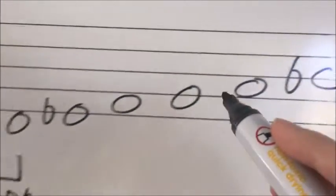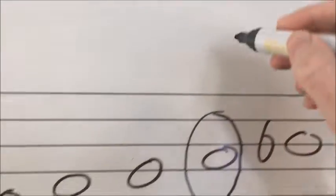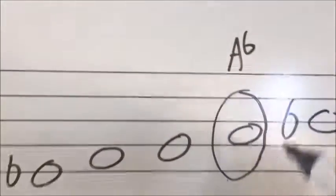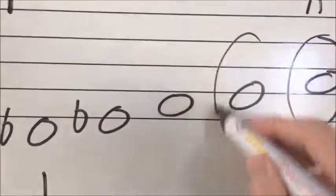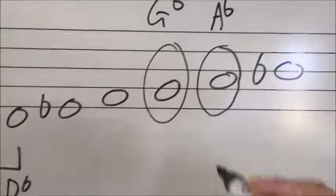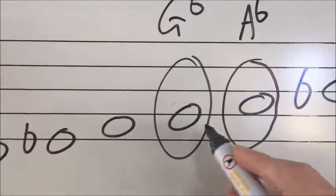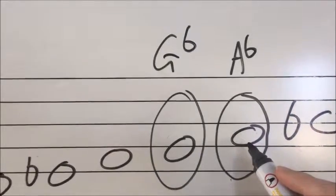So let's find them. We're expecting this note to be an A flat. I'm going to write that above it. And we're expecting this G to be a G flat. But instead, it's a normal G and a normal A, or a natural G and a natural A.